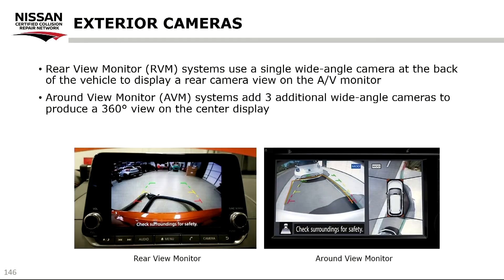Let's talk about exterior cameras. Rear view monitor or RVM systems use a single wide angle camera at the back of the vehicle to display a rear camera view on the AV monitor. The around view monitor or AVM systems add three additional wide angle cameras to produce a 360-degree view on the center display. Keep in mind that if a vehicle owner brings a vehicle in and states that their camera is blurry, that could be an indicator that the camera is not aligned properly.